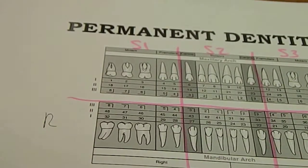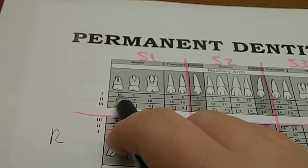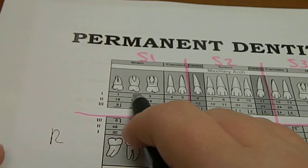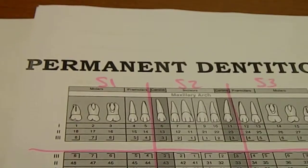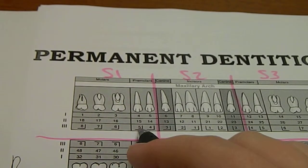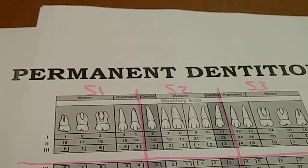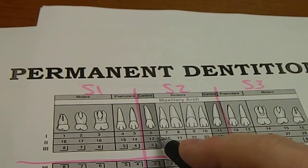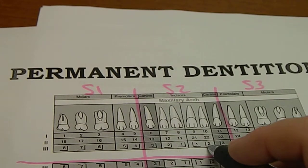For our exercises: what sextant is tooth number two in? Tooth two is on the right-hand side of the maxillary arch — one, two — so it's going to be sextant one. What sextant is tooth number four in? Our first molar is number three, and four is our second premolar, so this is still sextant one. How about tooth number ten? Our corner teeth are six and eleven, so the lateral incisor on the left-hand side is tooth number ten — that is in sextant two.